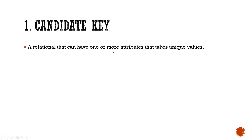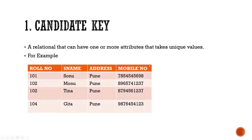The first one is candidate key. What does candidate key mean? A relation that can have one or more attributes that take unique values — those are used as the candidate key. So if we have one or more attributes, a simple example: we have a table showing role number, student name, address, and mobile number. Which columns can have unique values?